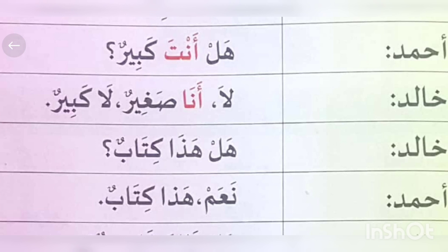Khalid: Hal anta sagheer? — No, I am small, not big. Khalid: Hal hatha kitab? — Is this a book? Ahmad: Naam, haadha kitab — Yes, this is a book.